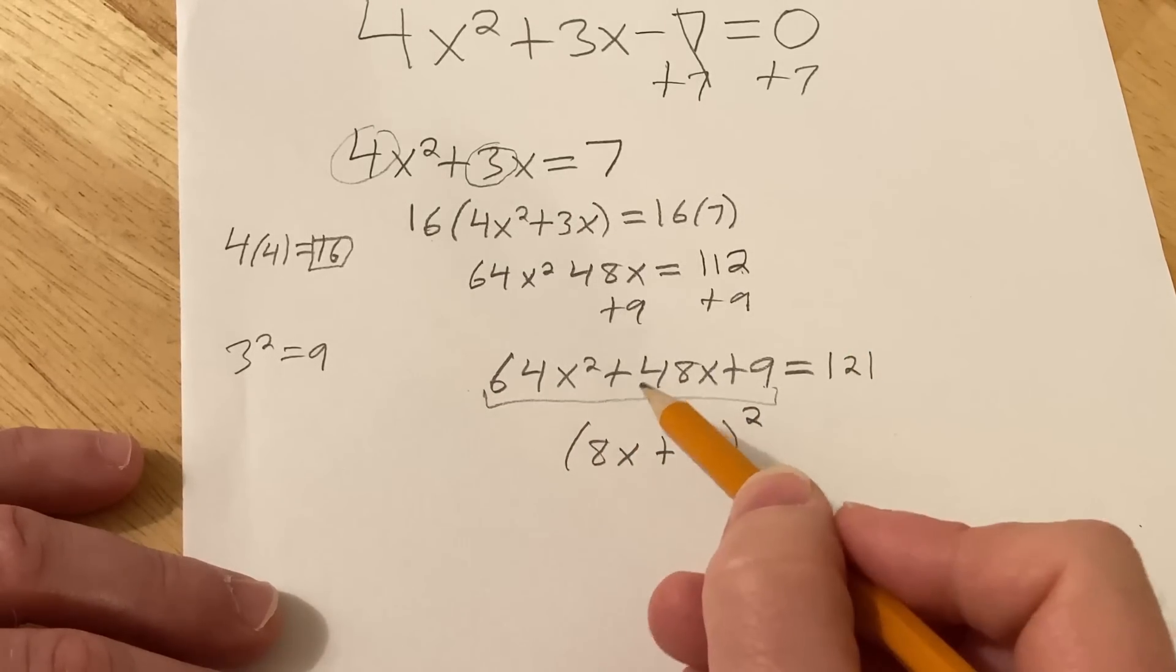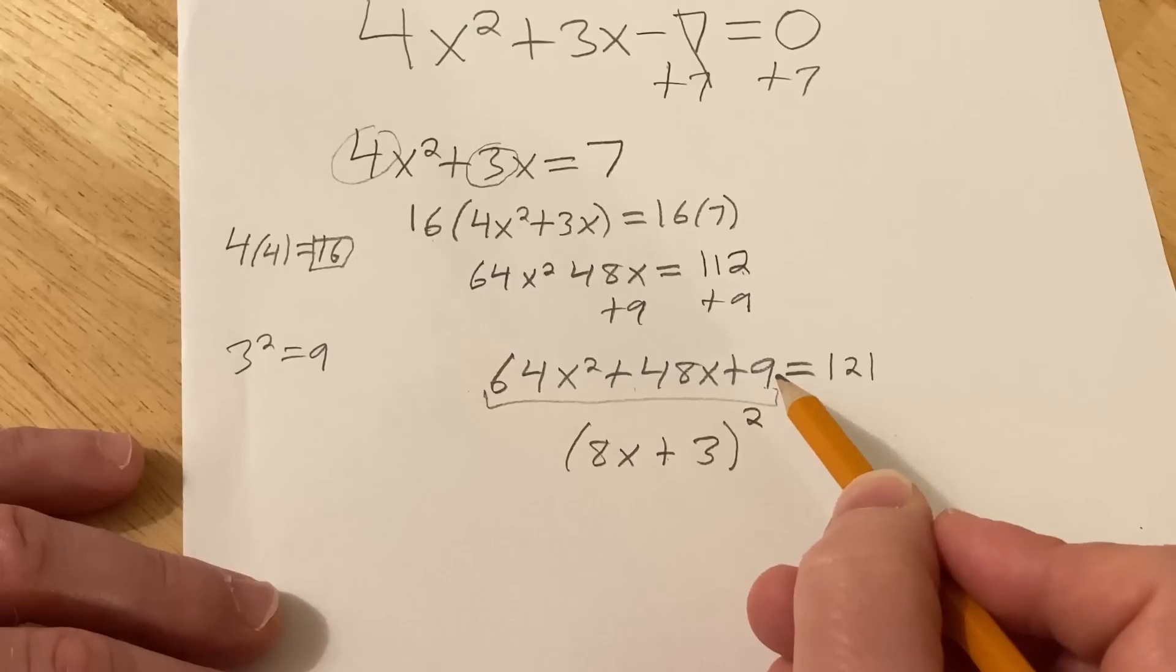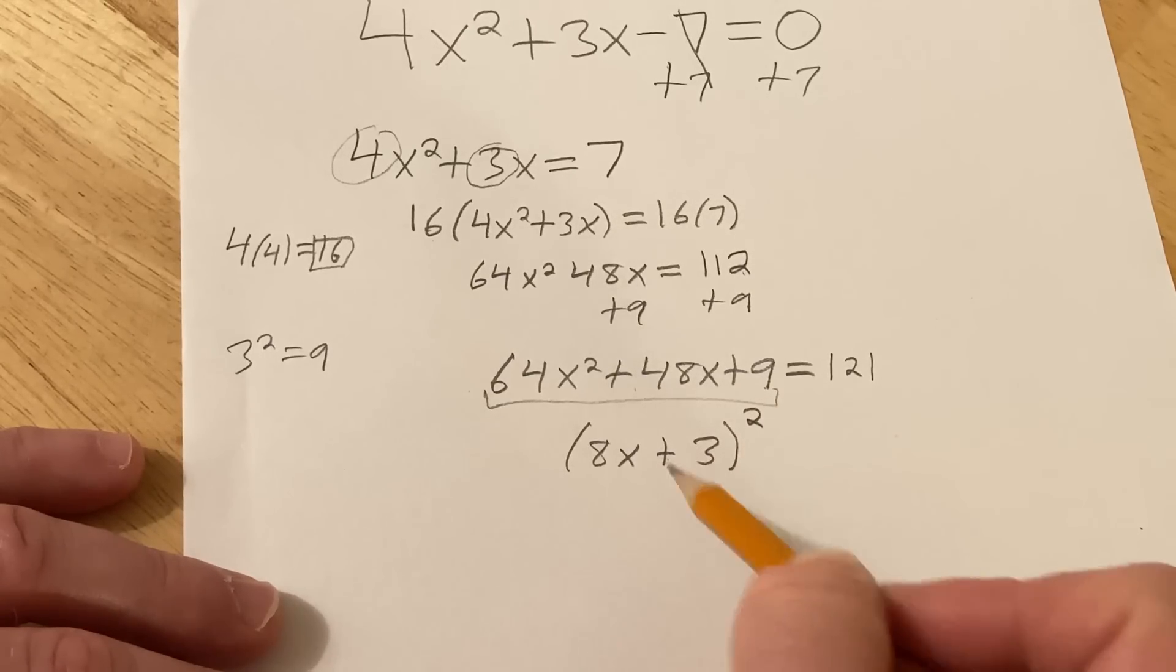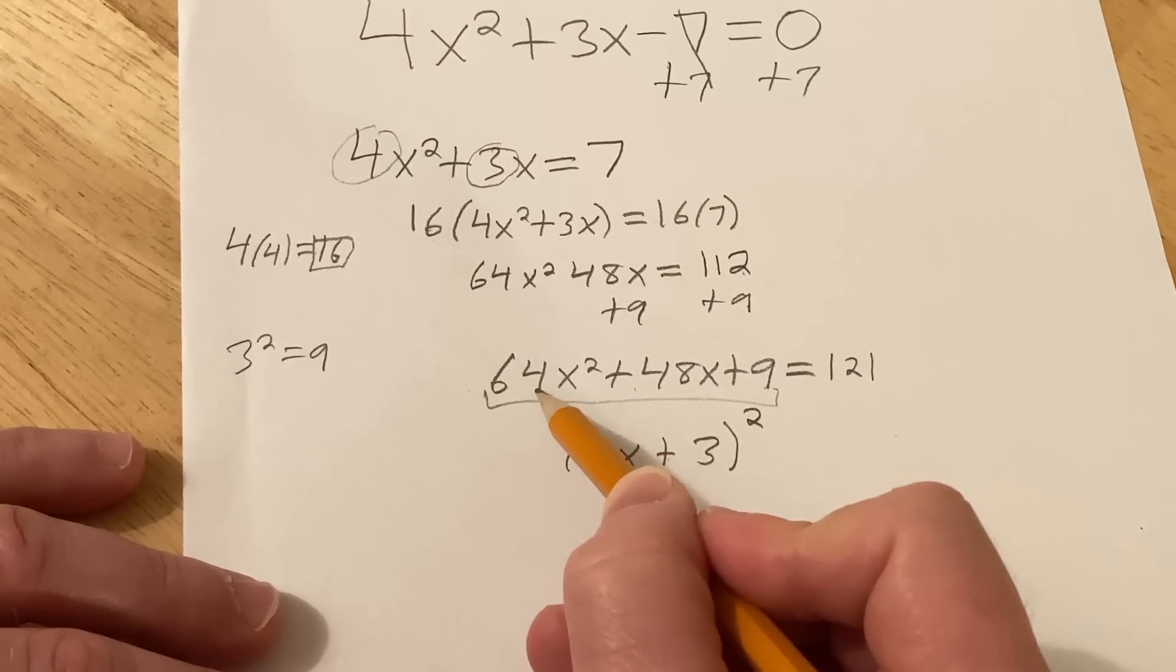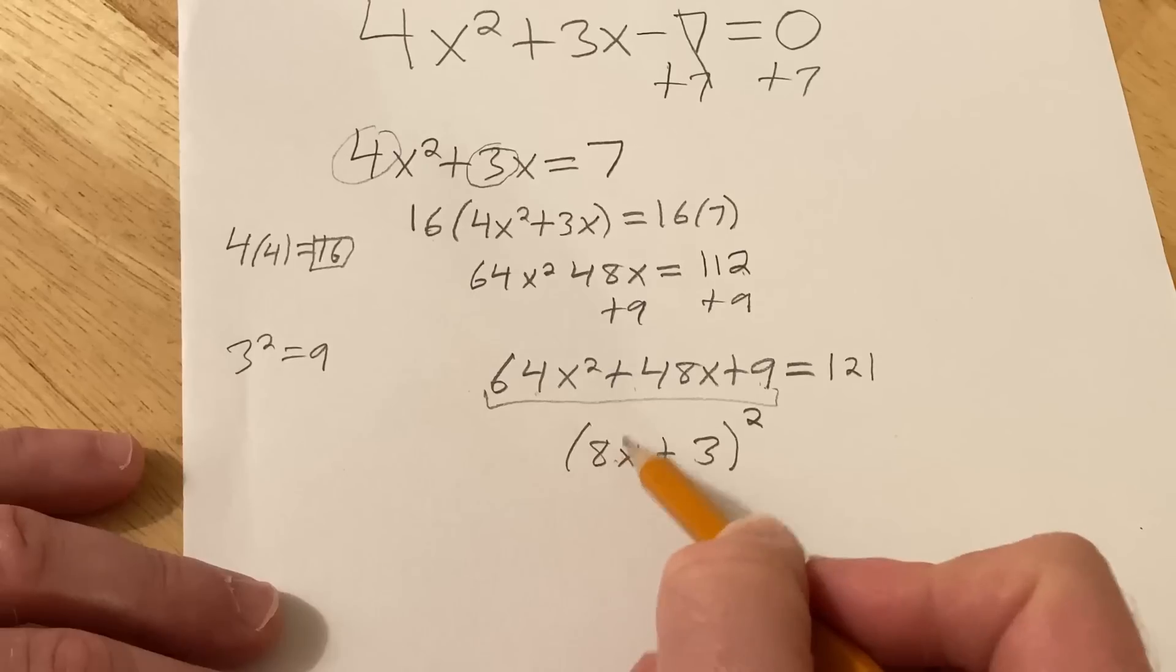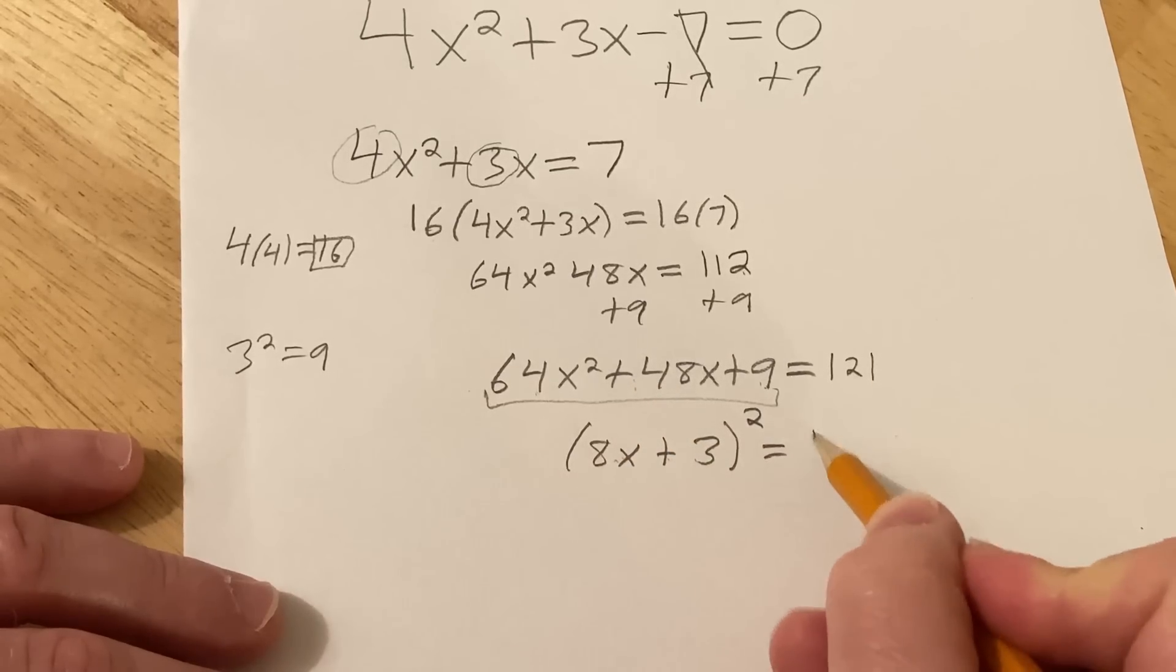So all of this magically becomes this. Just like when regular completing the square. You keep the sign. And then this is going to be a 3. And then this piece here is going to be the square root of that. Keep the sign. That's equal to 121.